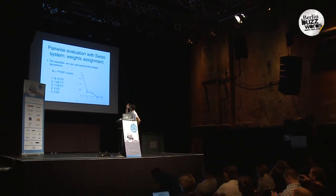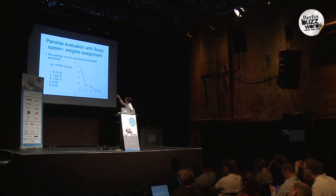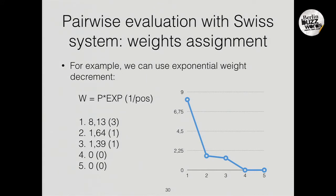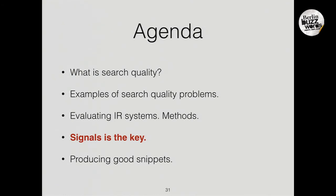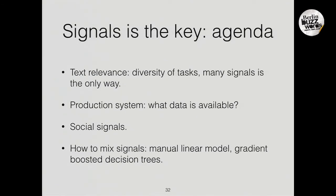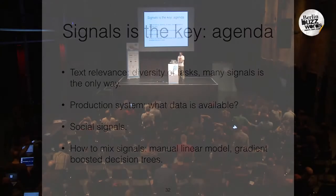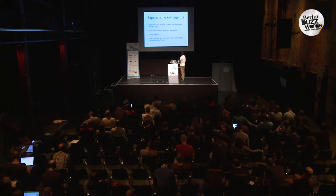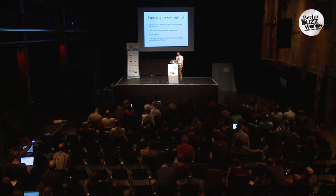Now, signals. Text relevance has a diversity of tasks and using many signals — including query classifiers — is the only way. We'll discuss what data is available in a production system, social signals if we have social media integration, and finally how to mix the signals — from a simple manual linear model to the most advanced state-of-the-art technique: gradient-boosted decision trees.